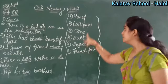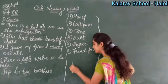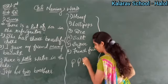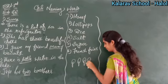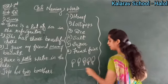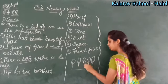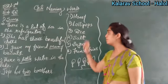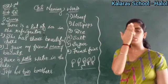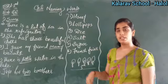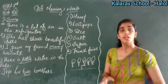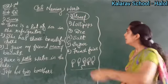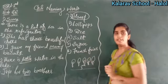Now, among these items, identify which ones you cannot count and circle those. Lollipops — you can count them: one, two, three, four, five. So lollipops are countable and you do not circle them. Honey — you cannot count honey; you get it from a honeycomb. So honey is uncountable — circle it.